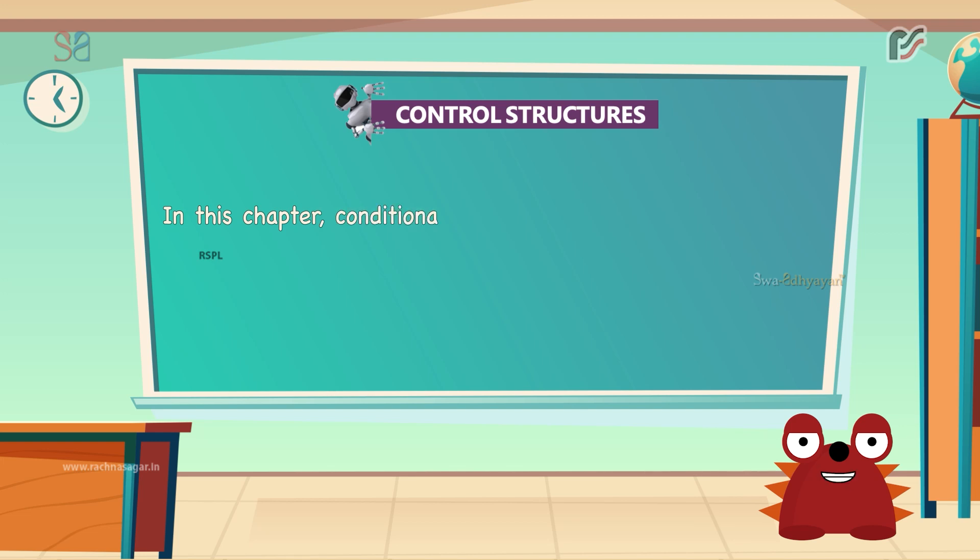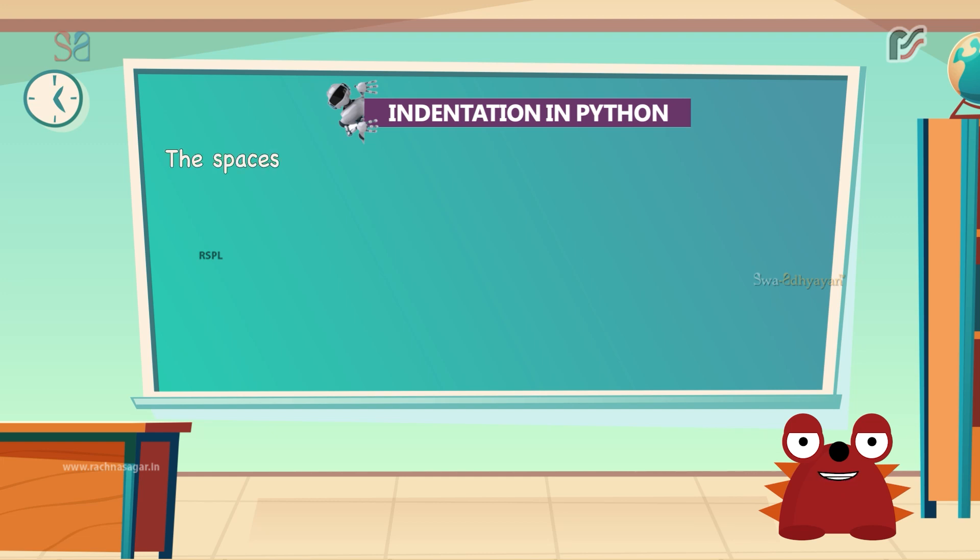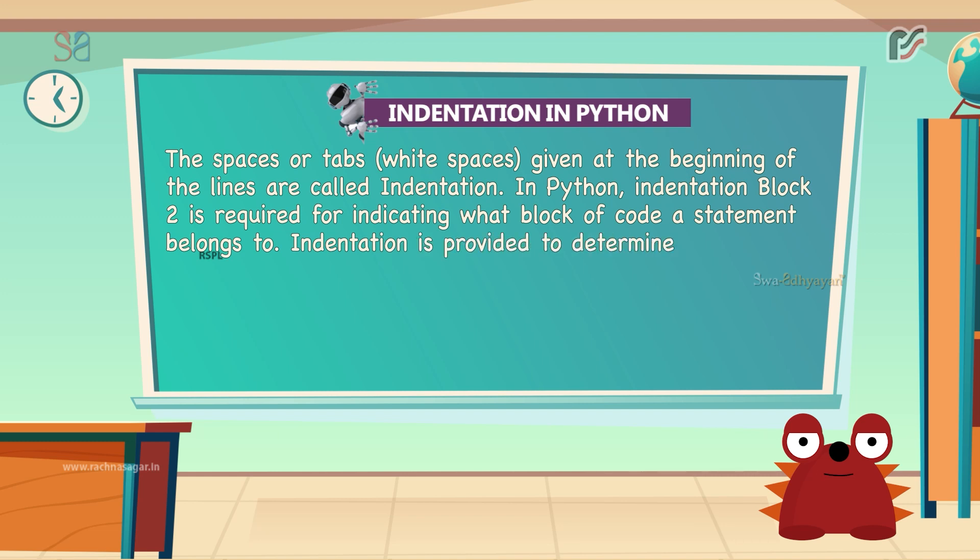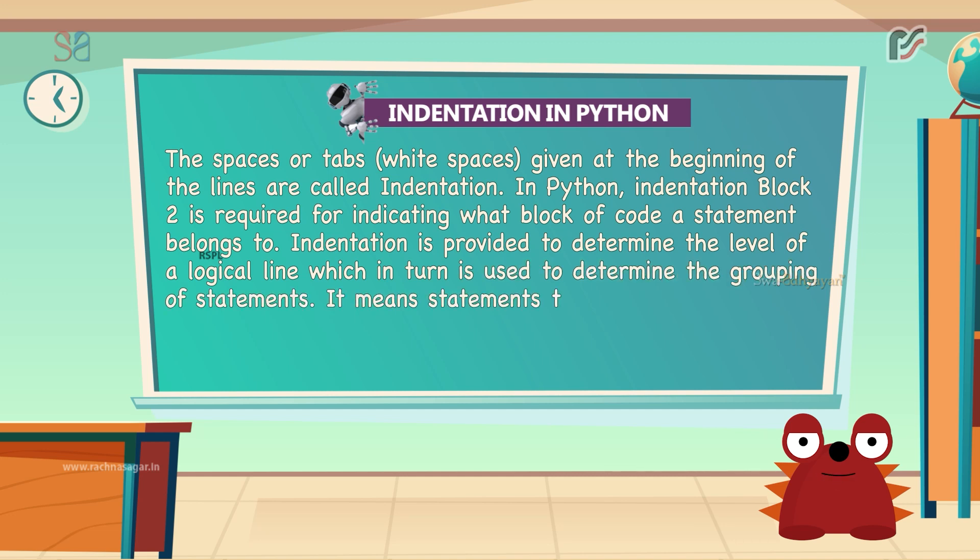We will discuss conditional control structures in detail after understanding the need for indentation in Python. So, let's learn about indentation now. The spaces or tabs that are white spaces given at the beginning of the lines are called indentation. In Python, indentation is required for indicating what block of code a statement belongs to. Indentation is provided to determine the level of a logical line which in turn is used to determine the grouping of statements. It means statements that go together must have the same indentation.